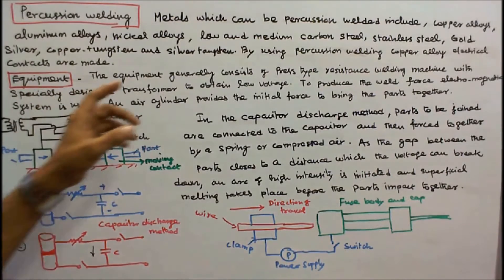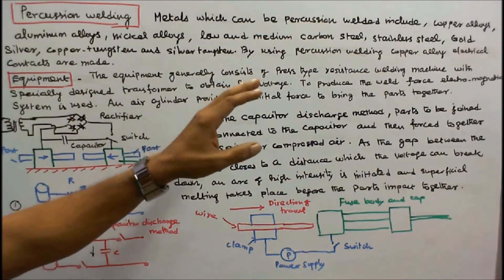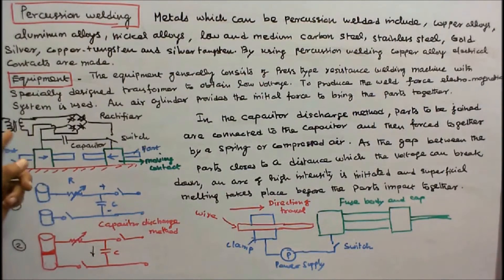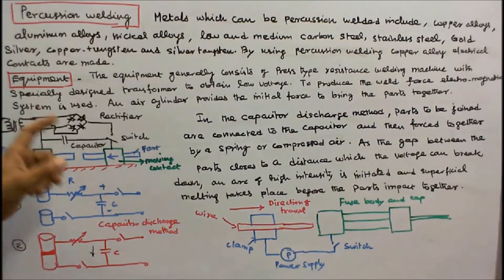The equipment generally consists of press type resistance welding machine with a specially designed transformer to obtain low voltage. To produce the weld force, Electromagnetic System is used.